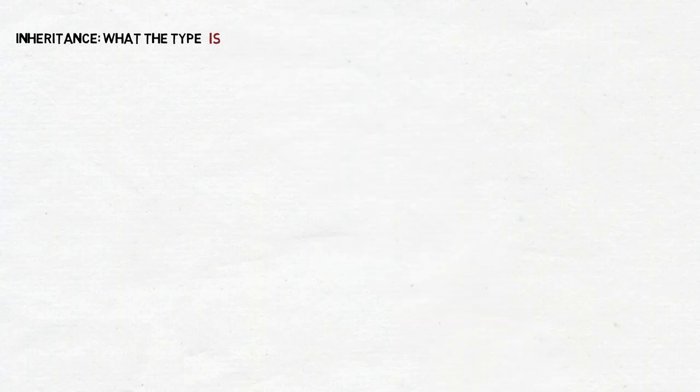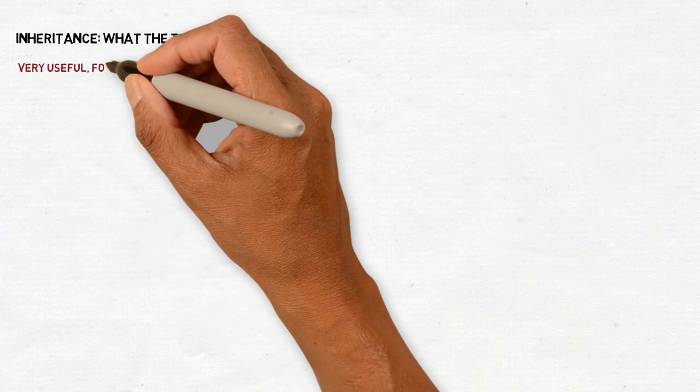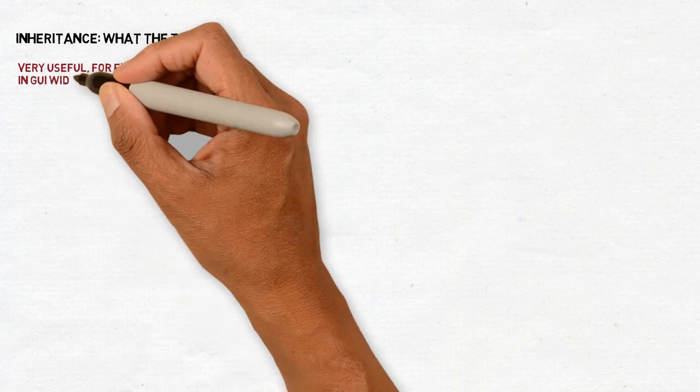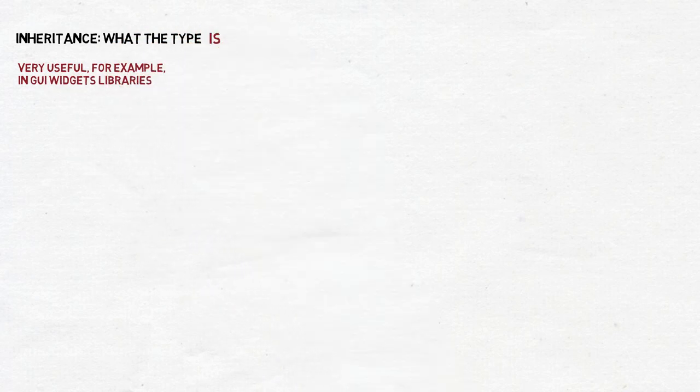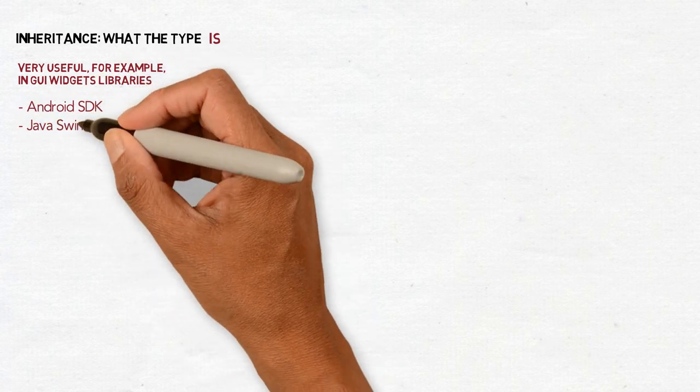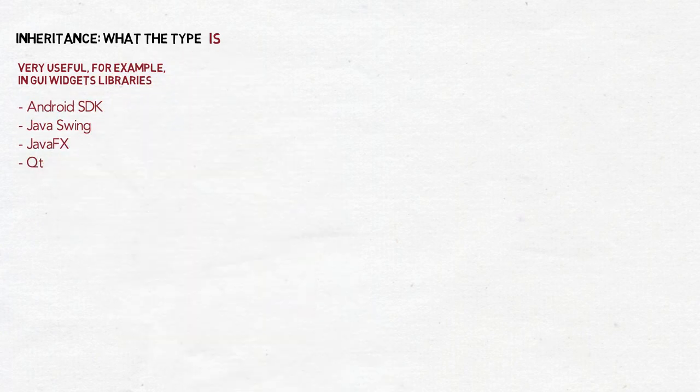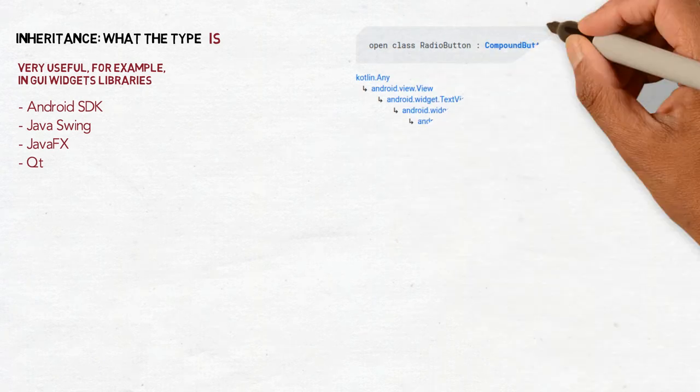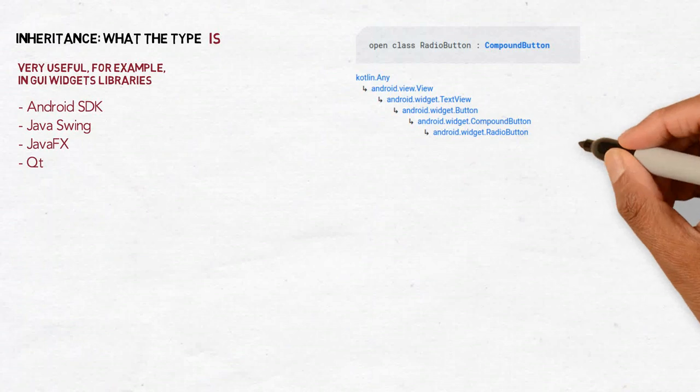Inheritance is about what the type is. There are still places in programming where deep hierarchies of inheritance are alive and kicking. One is graphic user interface toolkits of widgets like Android SDK, Swing or JavaFX in Java or Qt in C++.